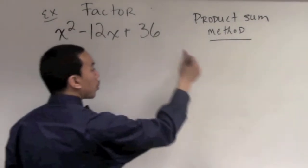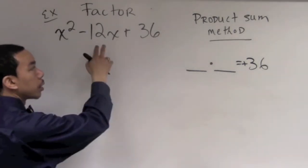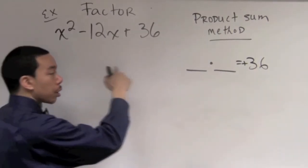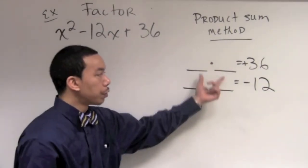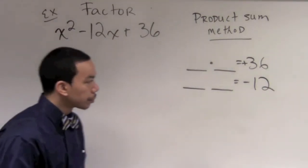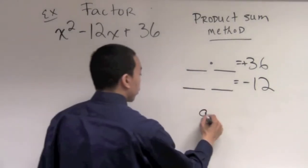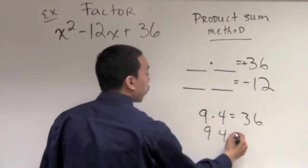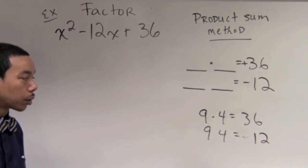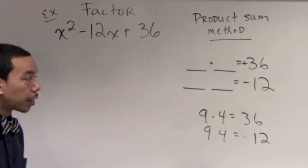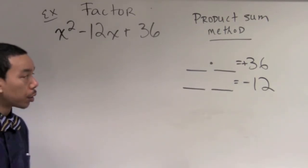The product-sum method says we take the constant term, 36, and ask: what times what gives us a positive 36? Then we look at the variable term — specifically negative 12 — and ask: what added or subtracted from what gives us negative 12? Those same two numbers must satisfy both conditions. Let's try 9 times 4, which is 36. But 9 plus 4 is 13 and 9 minus 4 is 5 — we don't get 12. So 9 and 4 won't work.